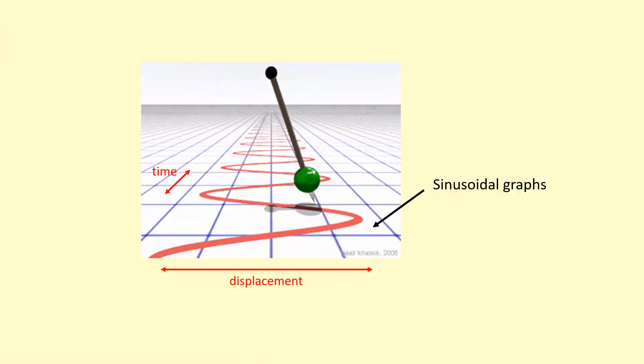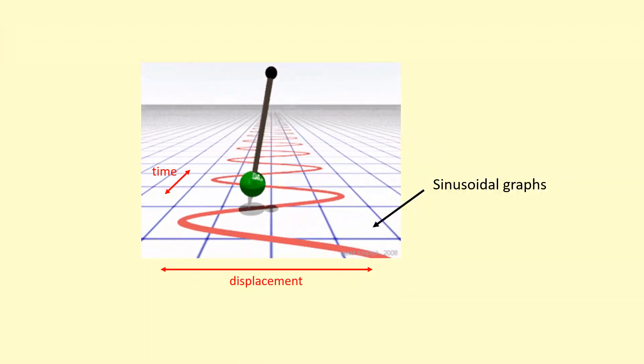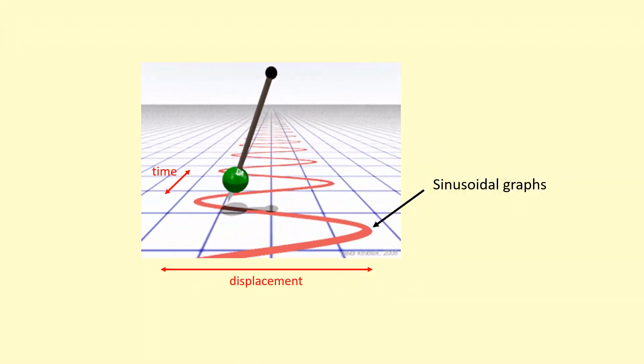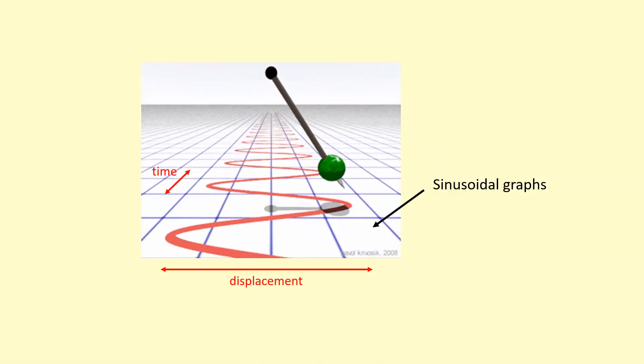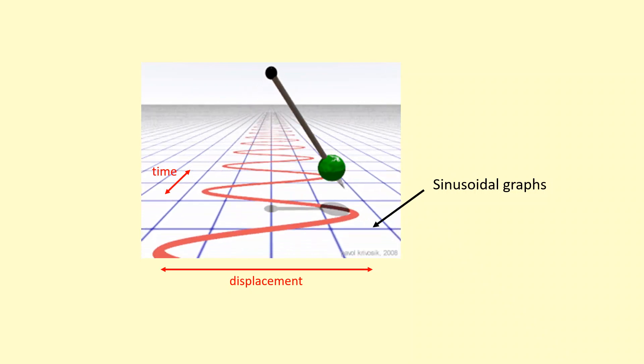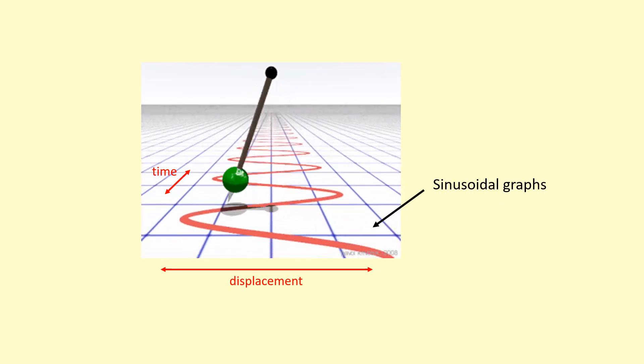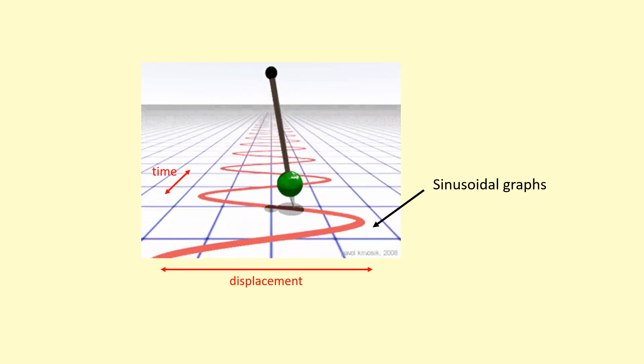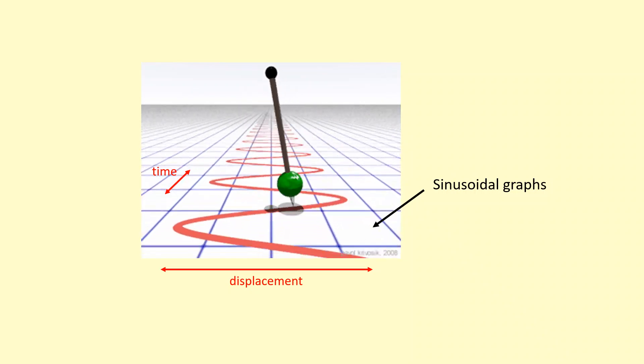We know the motion graph for simple harmonic motion is sinusoidal, but how do we find the displacement at some particular time, or even the velocity and acceleration?